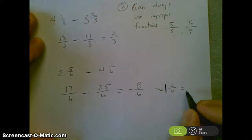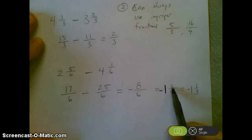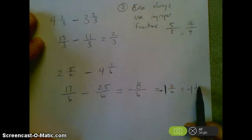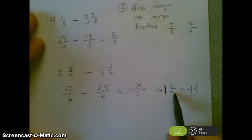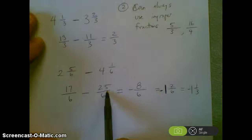that actually simplifies to negative 1 and 1/3, because I can divide the 2 and the 6, divide them both by 2, so 2 divided by 2 is 1. 6 divided by 2 is 3. So you can always use improper fractions to solve these.